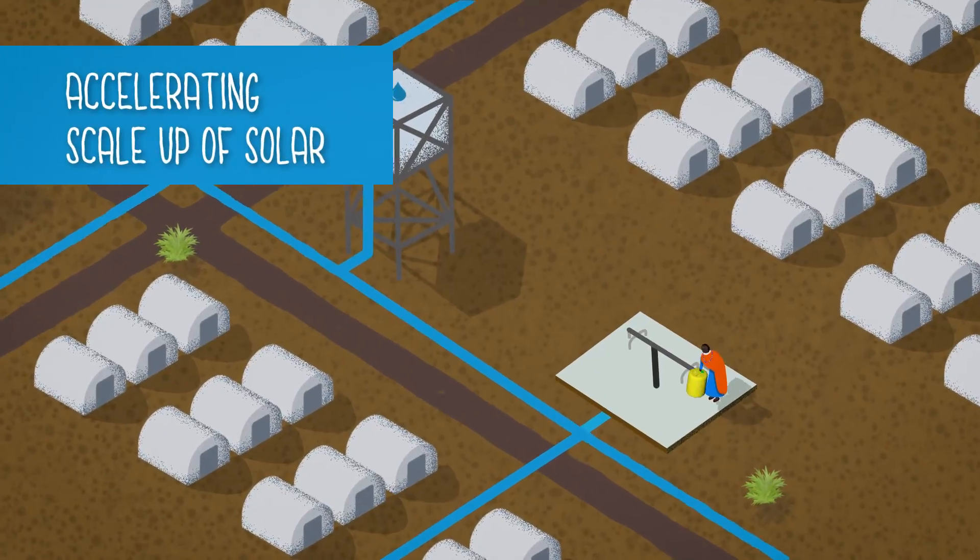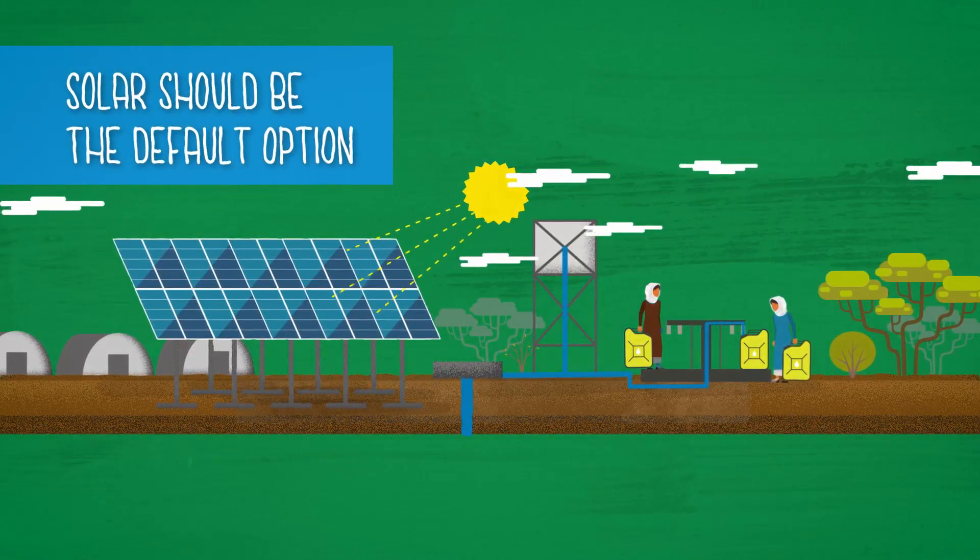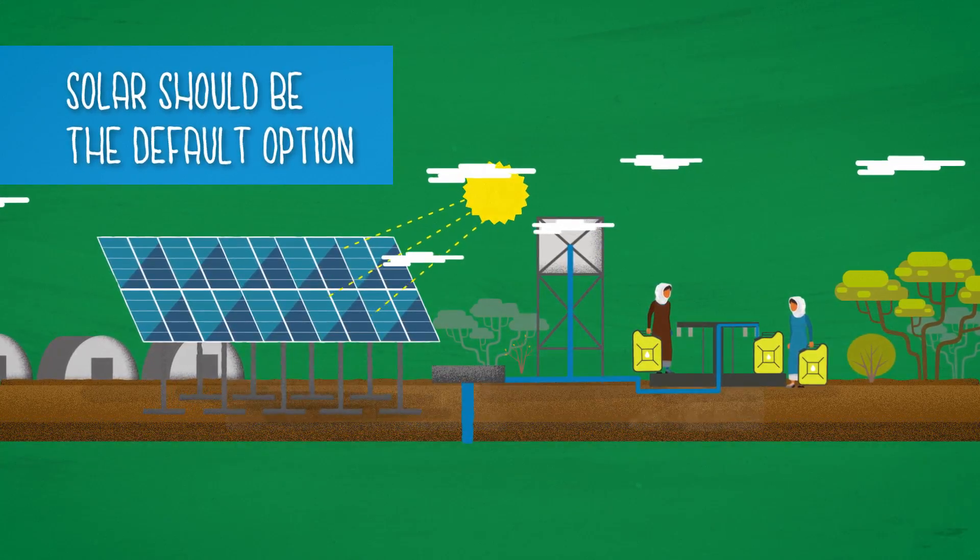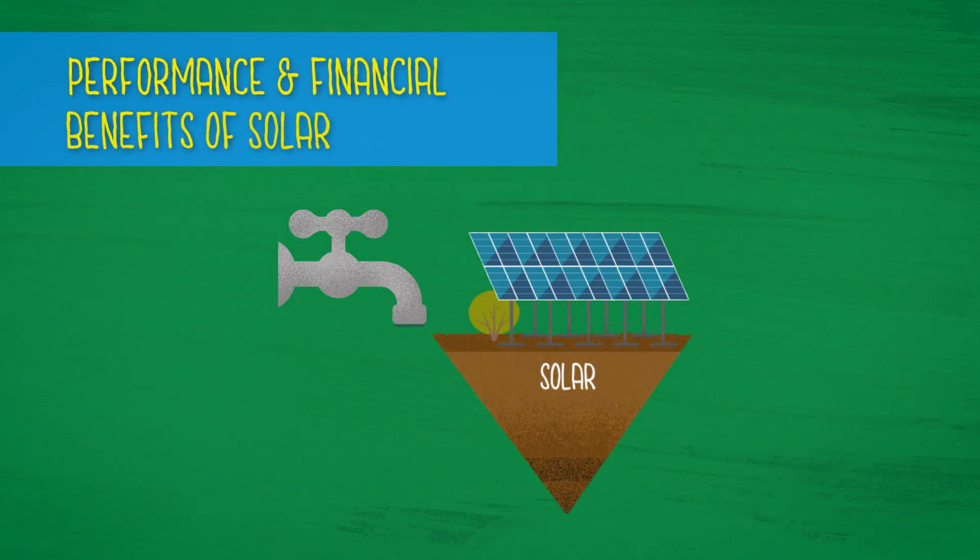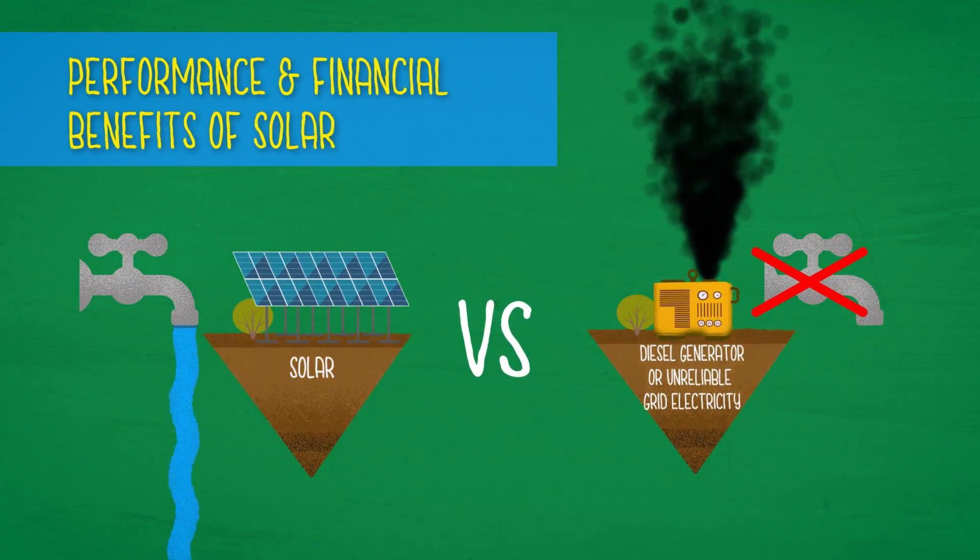The Global Solar Water Initiative would like governments and organisations planning and implementing water supply projects to adopt solar technology as a default first choice option anywhere where grid electricity is unreliable, while raising awareness among their staff of the performance and financial benefits of solar compared to other power options.